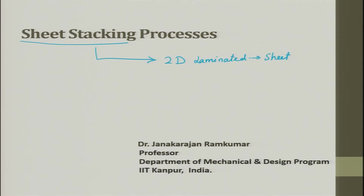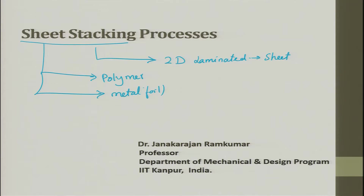An analogy: if you have a certificate and you laminate it on top and bottom with a polymer sheet, that sheet is what we are talking about. You can think of sheet as polymer, sheet metal, or metal foil. All those things fall under sheet. Our prime focus here is first rapid prototyping and from there towards rapid manufacturing.